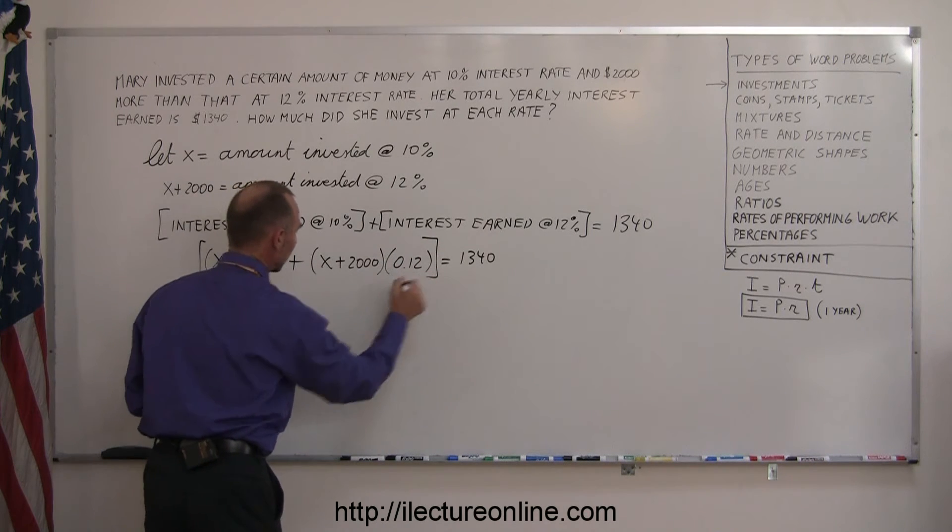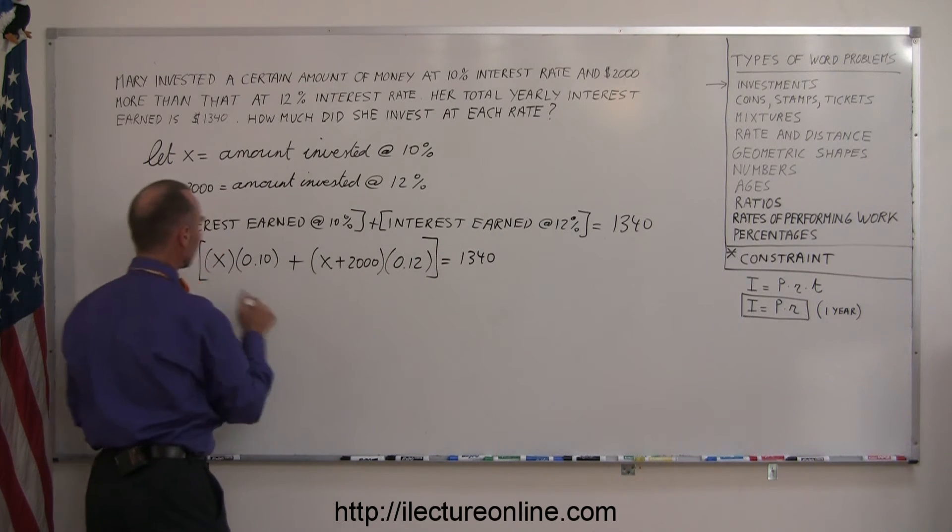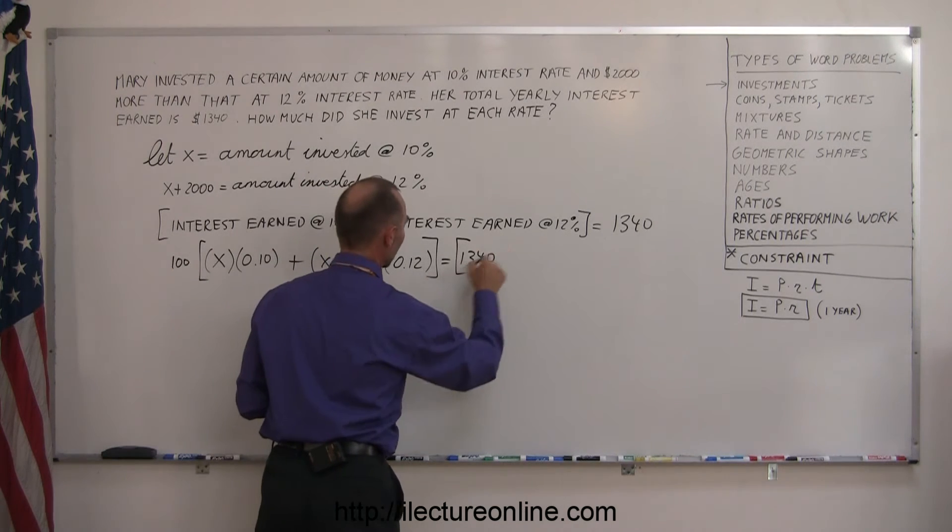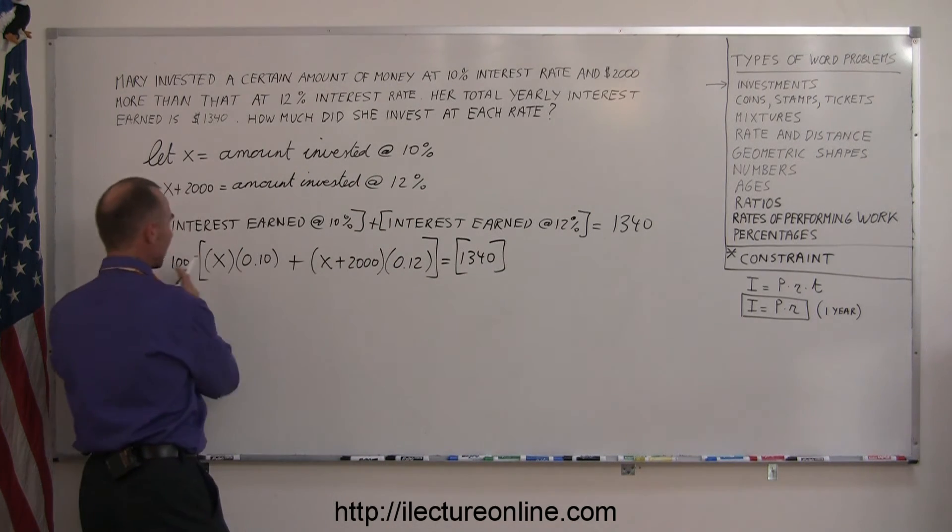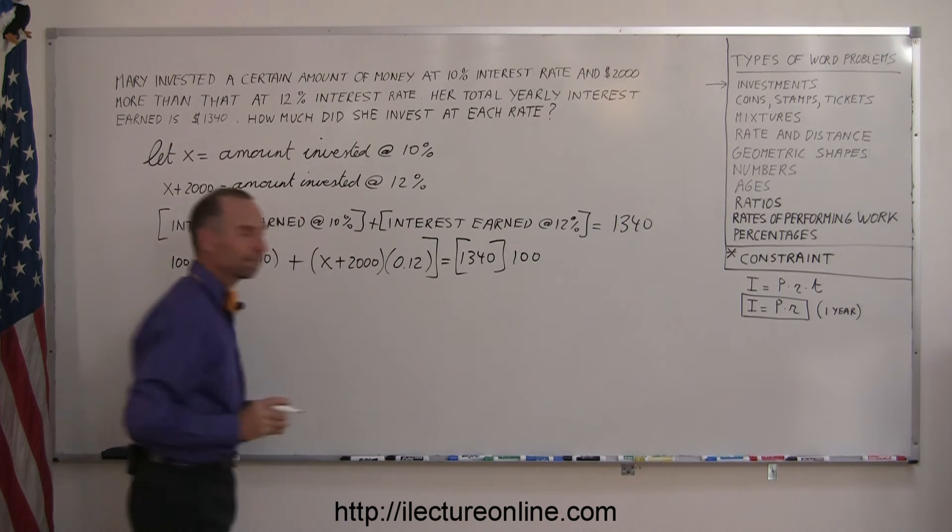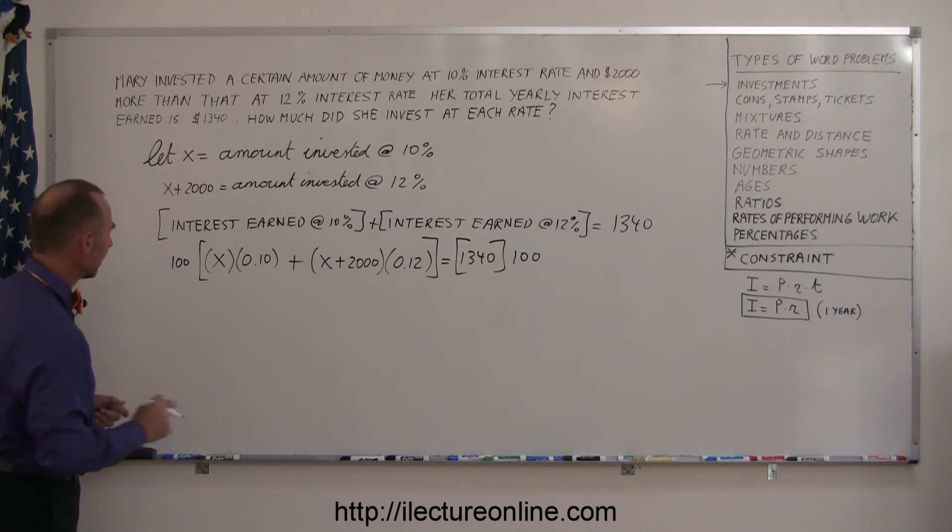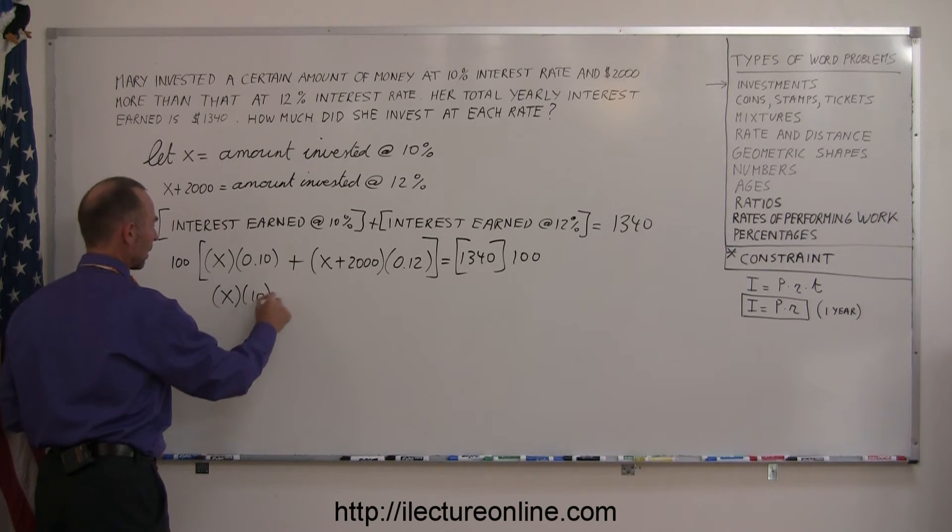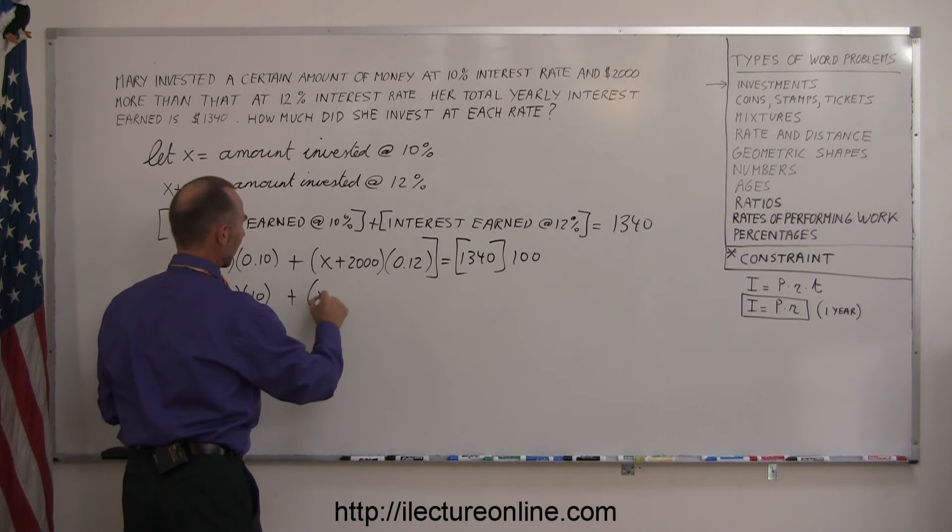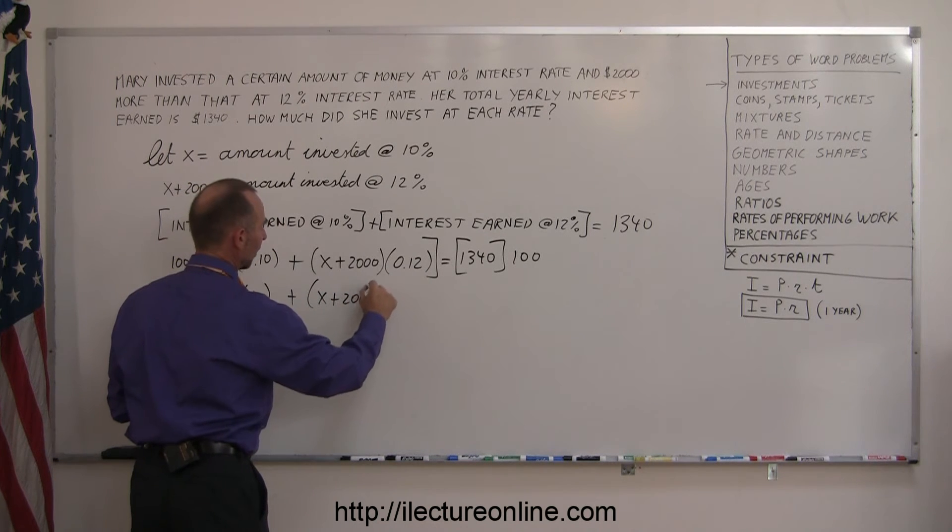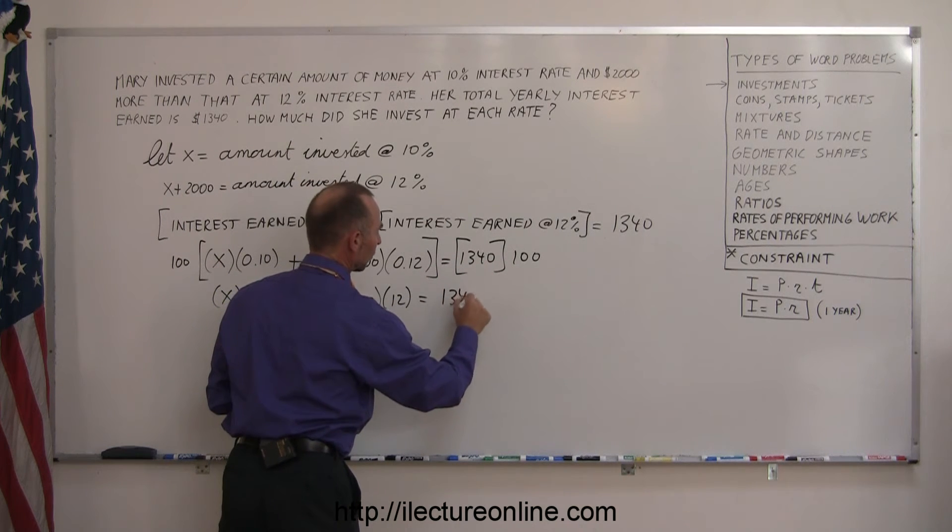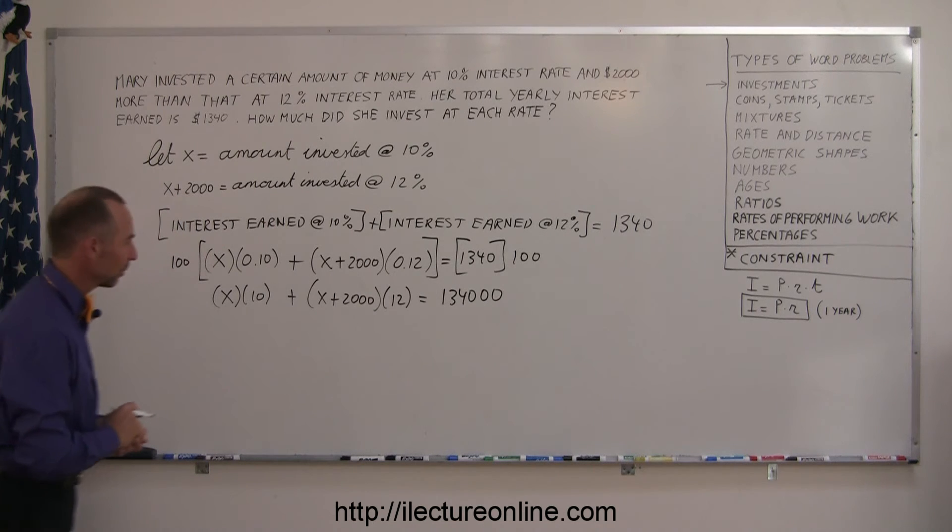The first thing we want to do is get rid of these decimal places by multiplying each side by 100. If I multiply by 100, the decimal moves over two places. Since I've multiplied the left side by 100, I must do the same to the right side. So 100 times this becomes x times 10, plus 100 times this becomes x plus 2,000 times 12, and 100 times this, I simply add two zeros. The decimal places are gone.